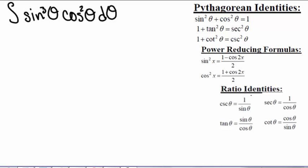Here we have the integral of sine cubed of theta times cosine squared of theta d theta. So if we try to use our substitution, u equals sine of theta.